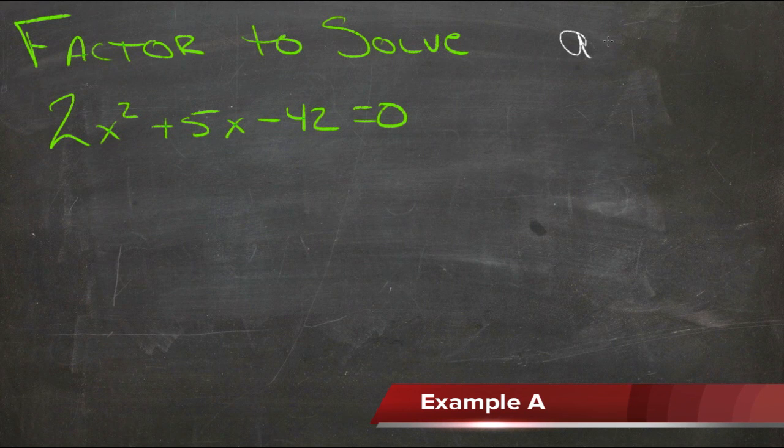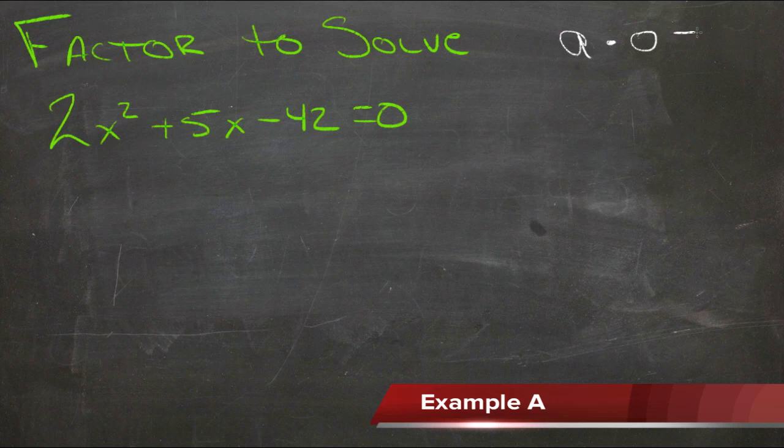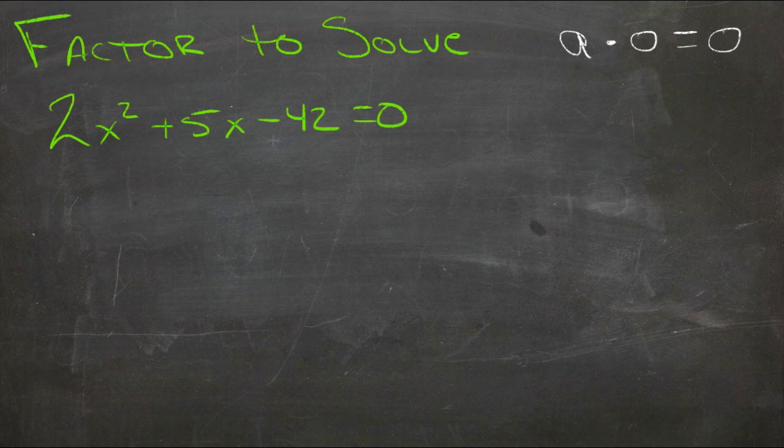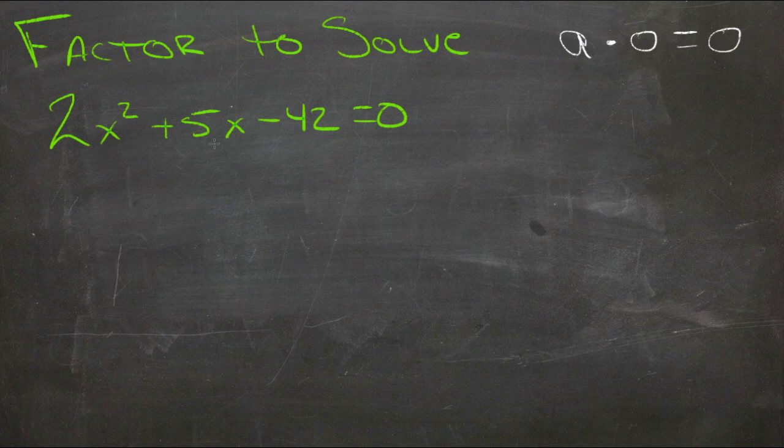It says that any number times zero equals zero. Now that's nice in this instance, because this equation right here doesn't solve easily. We can't just divide both sides by something to find out what x is. We can't factor out an x from both of these at the same time.